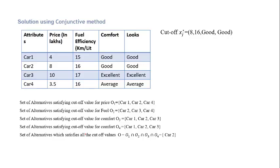Solution using the conjunctive method: the attributes and their values are given. First, we check which alternatives satisfy the cutoff value for the first attribute — price. The cutoff value is 8, so car 1, car 2, and car 4 are selected — three cars satisfy the cutoff value for price. Similarly, we find the set of alternatives satisfying the cutoff value for fuel efficiency, where the minimum requirement is 16.